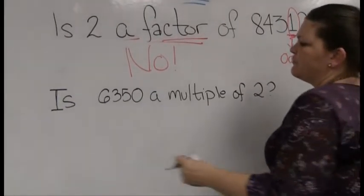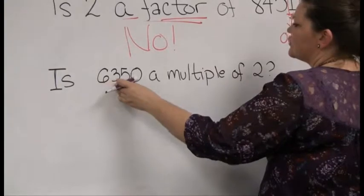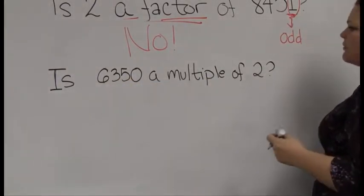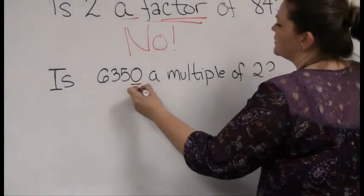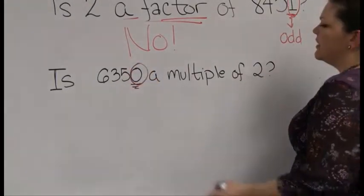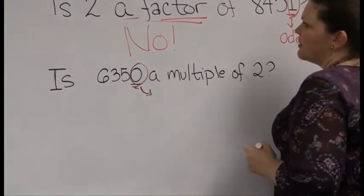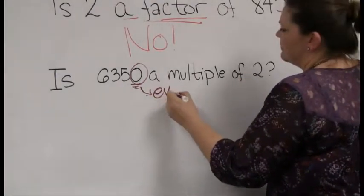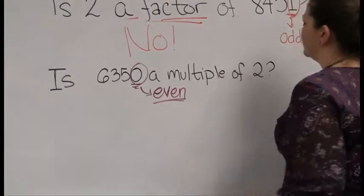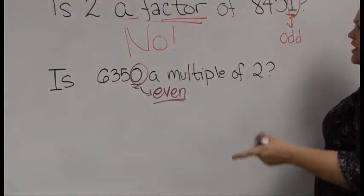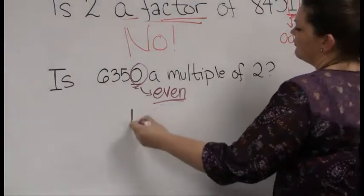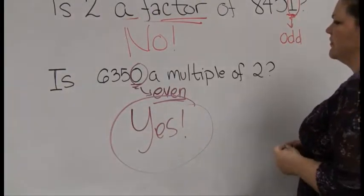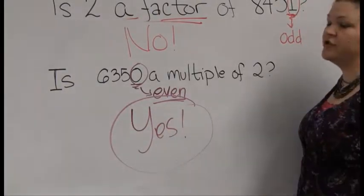Finally: is 6,350 a multiple of 2? I go right to the final digit of this larger number — that's a 0. This is the one that tricks a lot of people, but 0 is an even number, it signals an even number, and therefore this number is definitely a multiple of 2. And that's it for the twos trick.